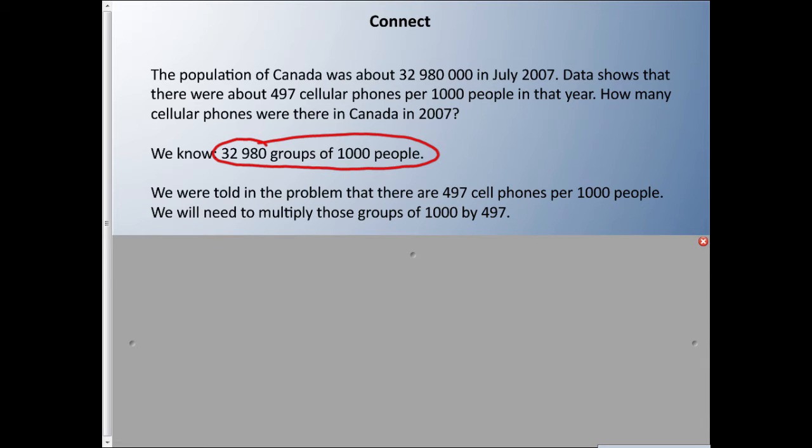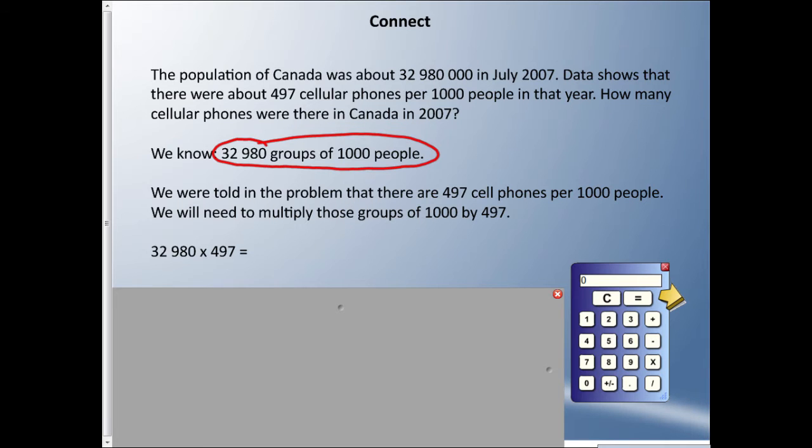We're told there are 497 cell phones per thousand people. We'll need to multiply those groups of thousand by 497. So I'll take 32,980 and multiply by 497. We're taking the number of groups of a thousand people in the population of Canada and multiplying by 497 cell phones per thousand people. I get this really big number—in Canada there were 16,391,060 cell phones in 2007.